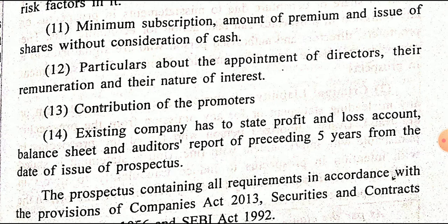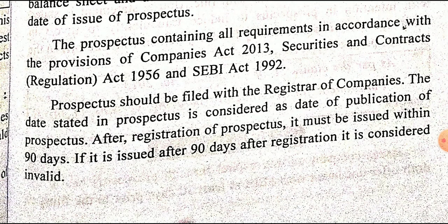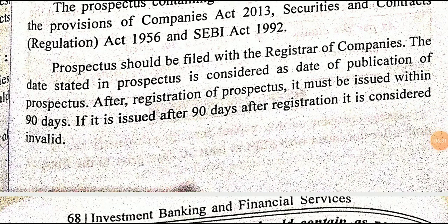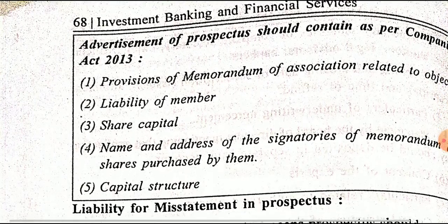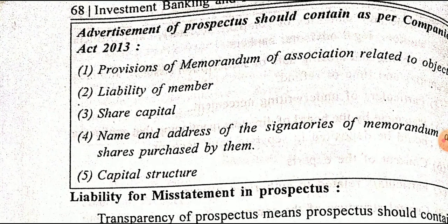This is the content or information that should be included in the prospectus, on the basis of which investors can take a decision whether to invest in a particular company or not. The prospectus should be filed with the registrar of the company, and the date on the prospectus is considered as the date of publication. After registration, the prospectus must be issued within 90 days; if issued after 90 days, it is considered invalid.